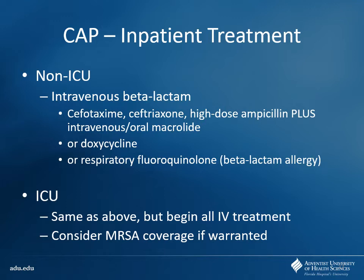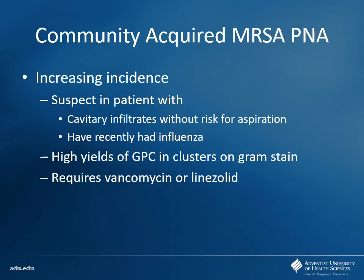For the ICU — same as above, but make sure you're going with all IV therapy whenever possible. At this point, you also want to consider MRSA coverage. What's a good MRSA-covering drug? Vancomycin — the go-to MRSA-covering IV antibiotic. Community-acquired MRSA pneumonia used to be something we never thought about, but now it's becoming more and more prevalent. Think about it if a patient on chest x-ray has cavitary infiltrates or if they've recently had influenza — that predisposes them to developing MRSA community-acquired pneumonia. In those cases, it requires either vancomycin, or if you cannot use that for whatever reason, linezolid would be a good backup drug.